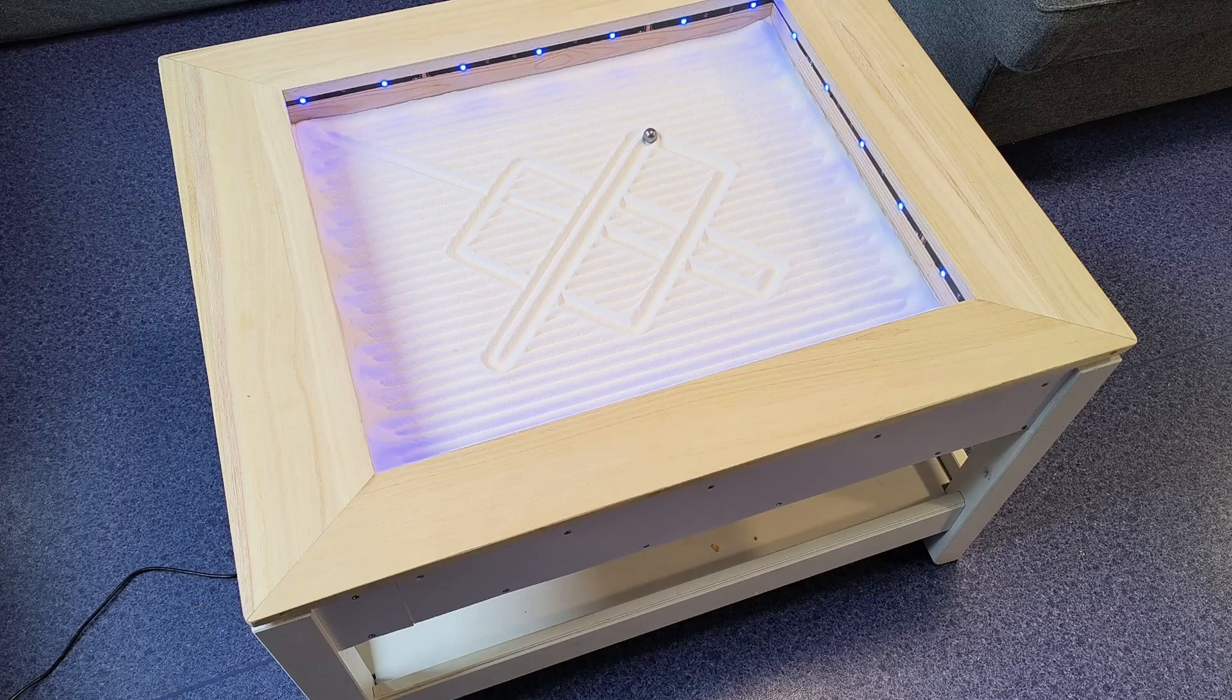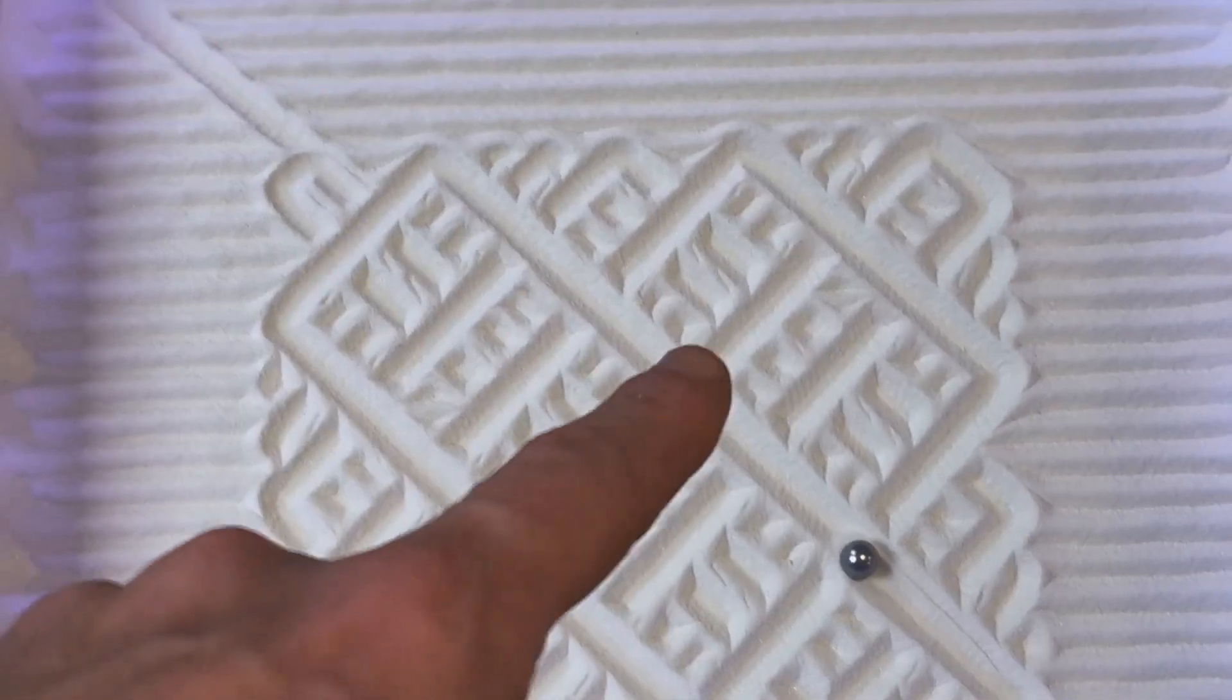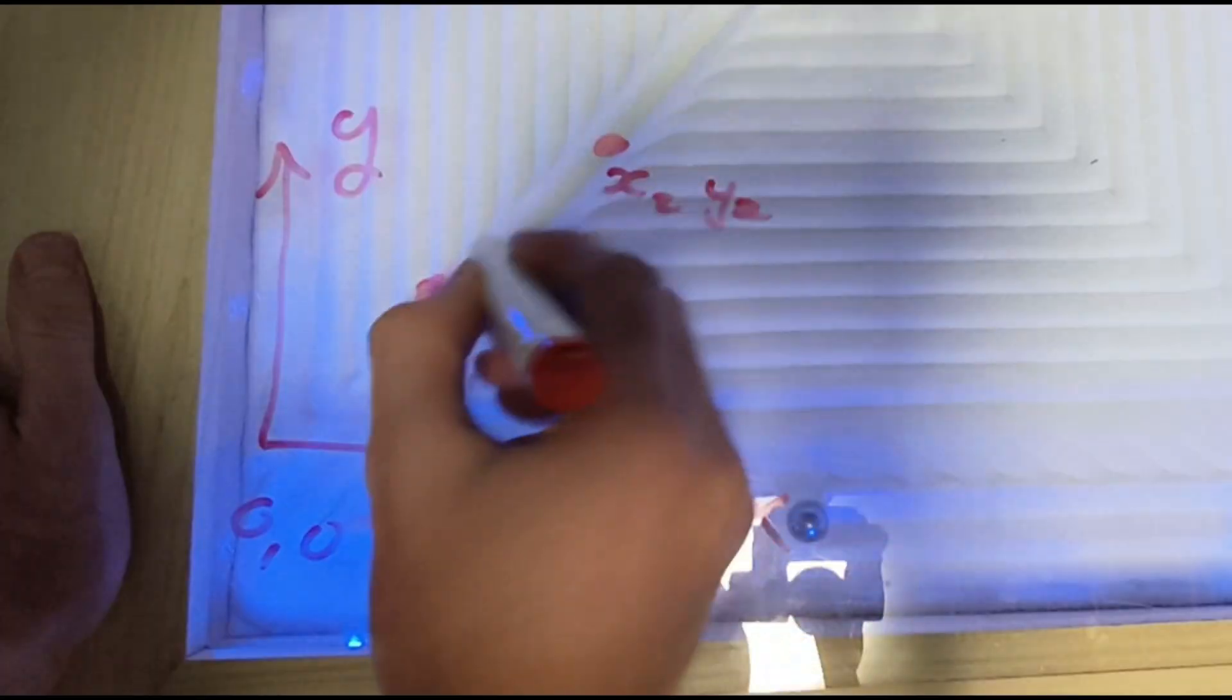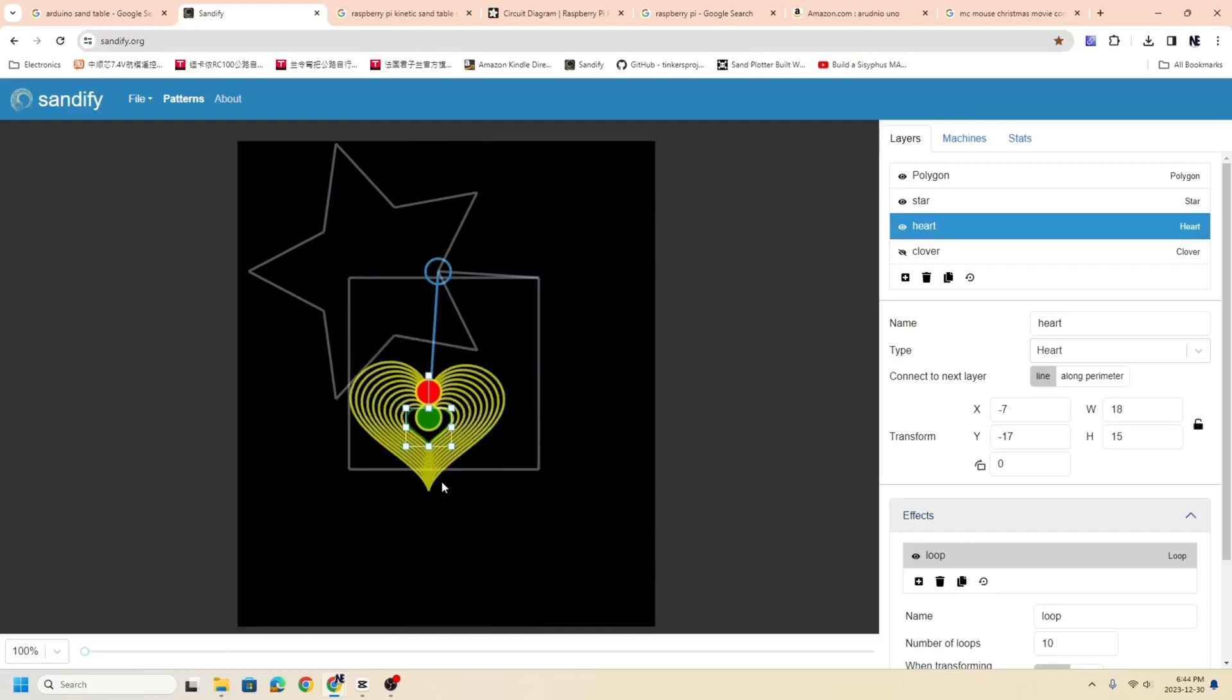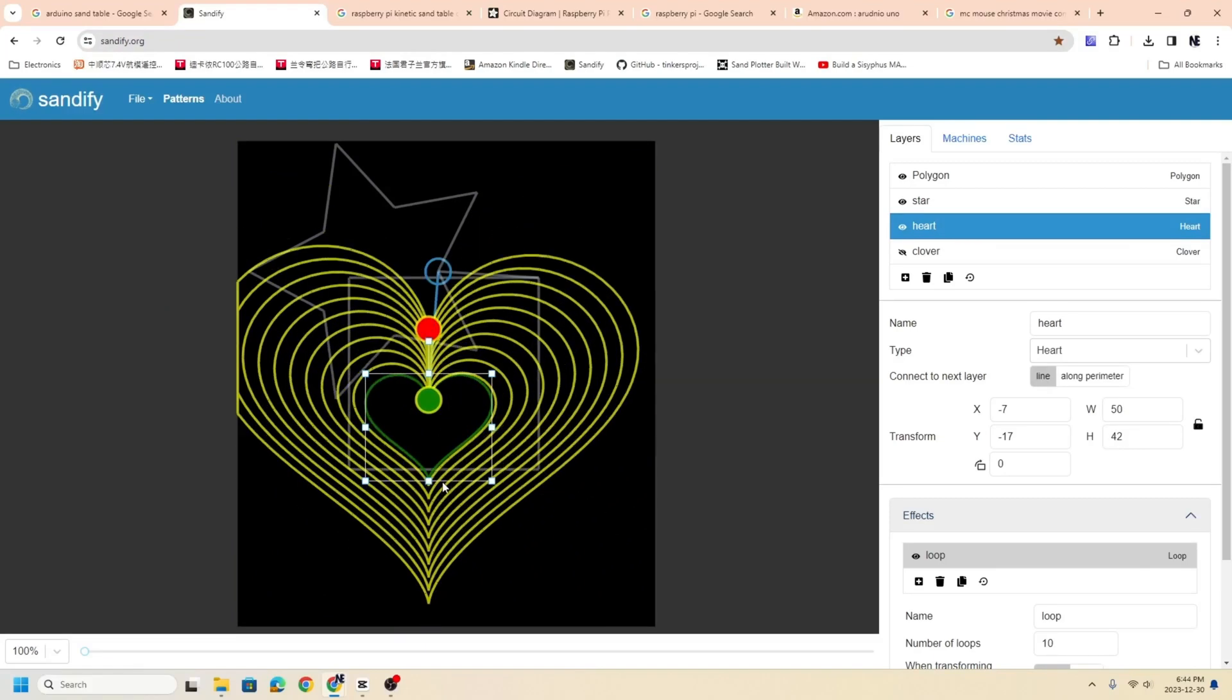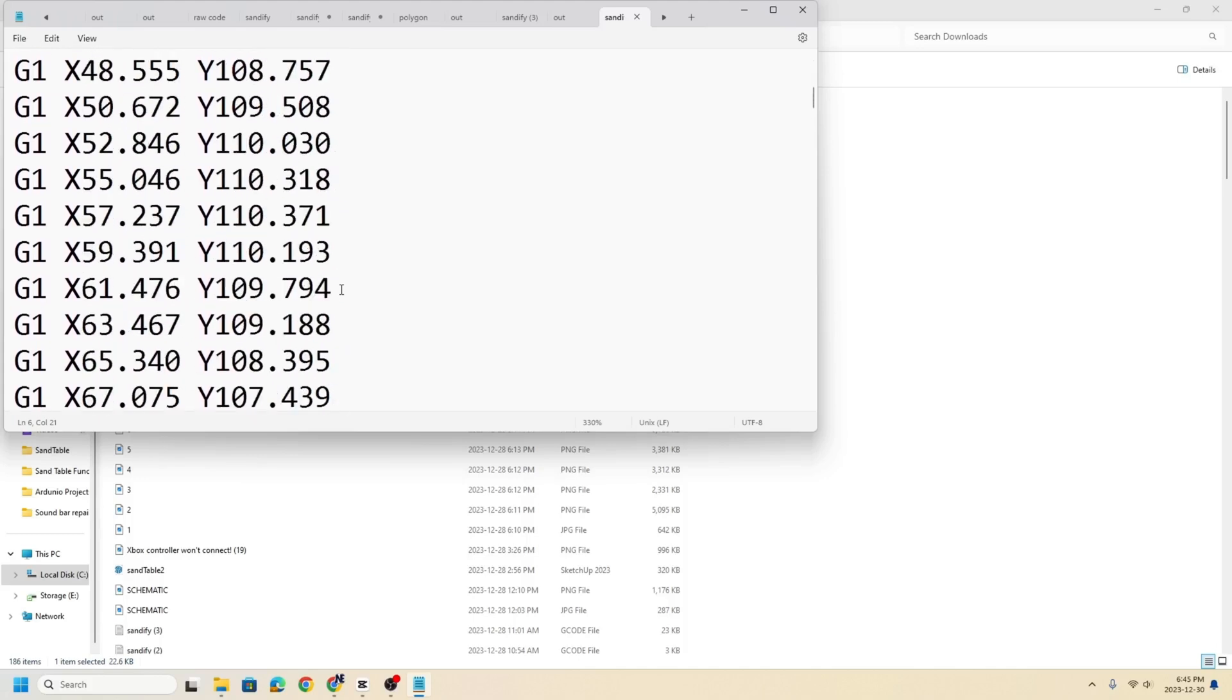Why did I choose a circular design? Well, if you recall from my older design, I made a sand table from a coffee table that just used straight lines. It was more linear in nature because I wanted to fit everything on the Arduino. You have to store all the points, but when you're doing circles, the G-code is so much longer.